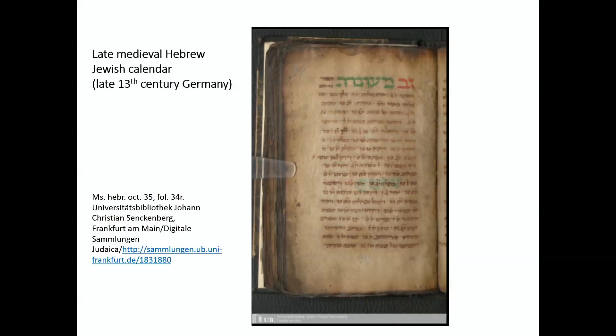And as late as the 13th century, Jewish calendars are still being written as a continuous text, and not in any way as a table. This is a document from Germany, late 13th century, and the text reads like this: New Year on Tuesday. Fast of Gedalia on Thursday. On the Sabbath, fifth of the month, a certain portion of Deuteronomy is read. Yom Kippur is on Thursday, et cetera. It's a text which is really very heavy to read, and there is absolutely no visual effect whatsoever.